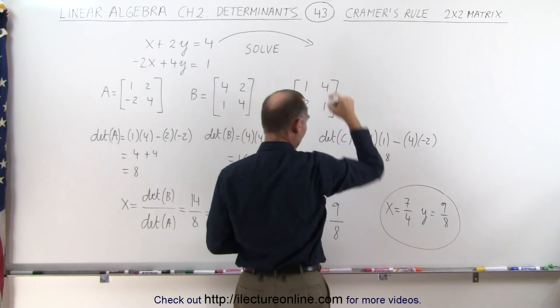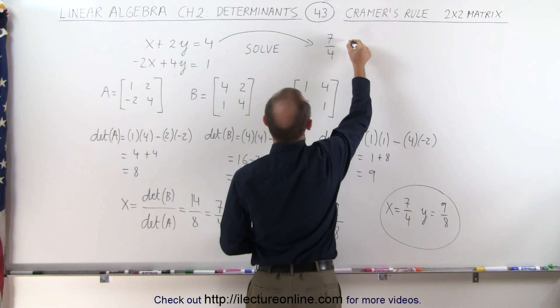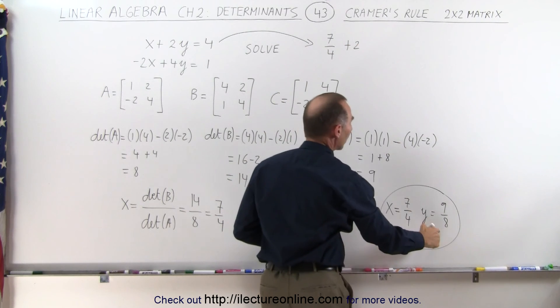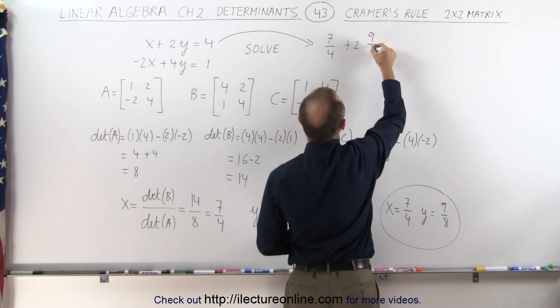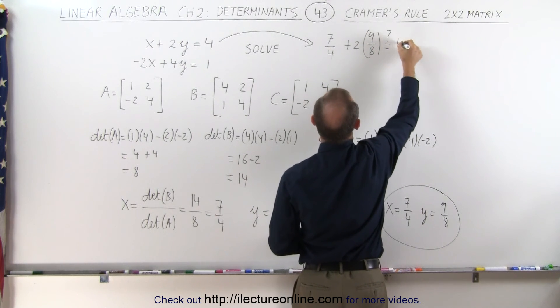So in the first equation we have X, which is 7 over 4, plus 2 times Y, which is 9 over 8. And let's see that that is indeed equal to 4.